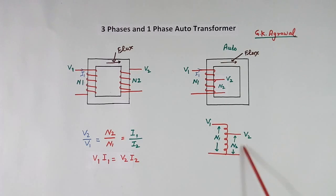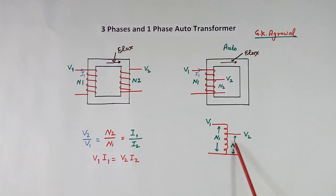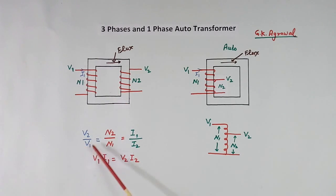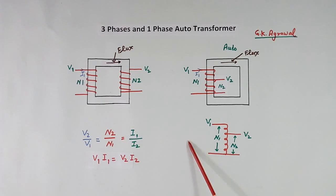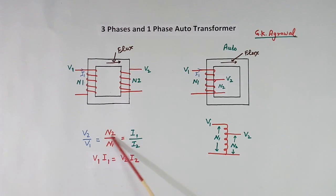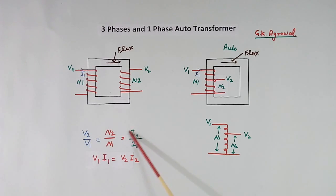But the size of the transformer becomes small. The voltage and current ratio and turn ratio formulas are the same. V2 by V1 is equal to N2 by N1 is equal to I1 by I2. Primary VA power, V1 into I1, is equal to secondary power, V2 I2. If turns are more, voltage is more, but current will be less.